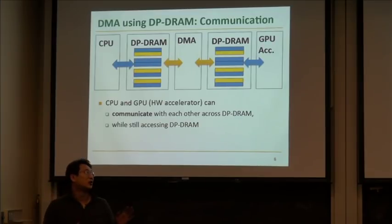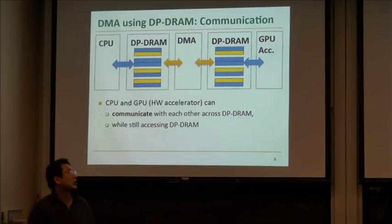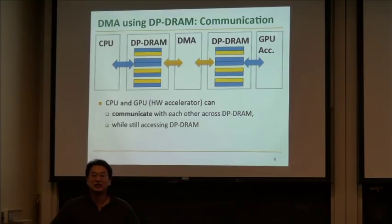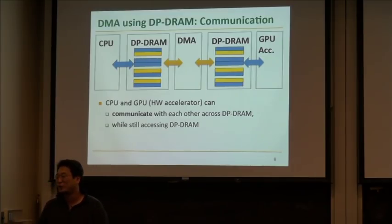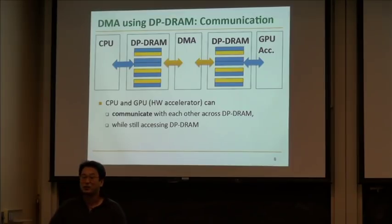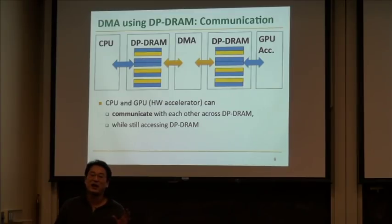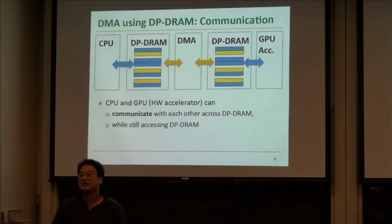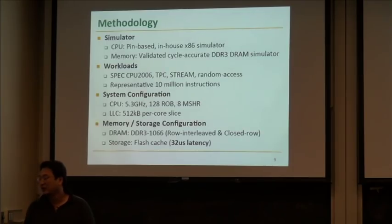By introducing dual-port memory and an external DMA, we can use the memory channel in a more efficient way. The question was whether we're doubling the ports on the DRAM — yes. The cost of doubling the dual-port memory channel is about 20% area overhead. Previously the CPU bore the overhead to increase channel count, but I moved that overhead to the dual-port memory side because memory is cheaper than CPU.